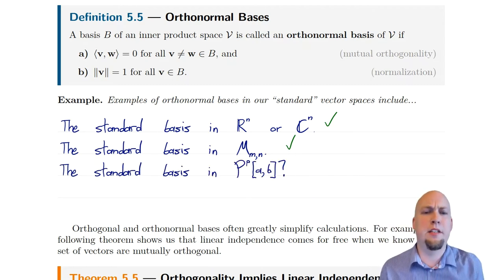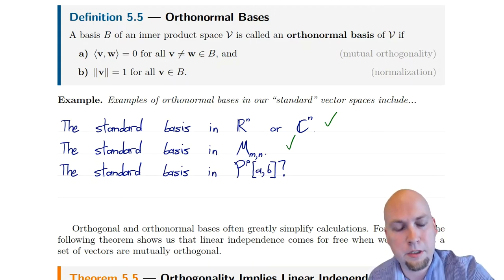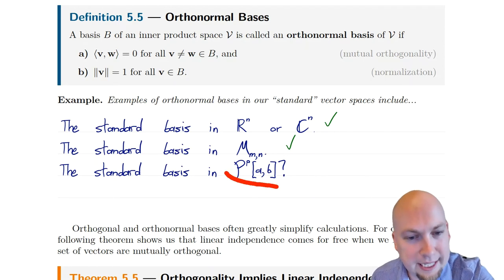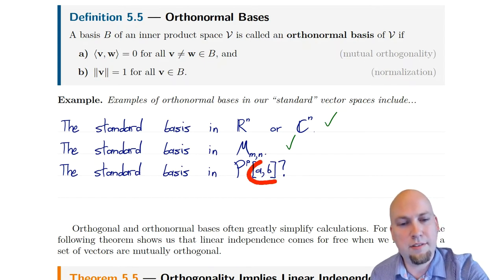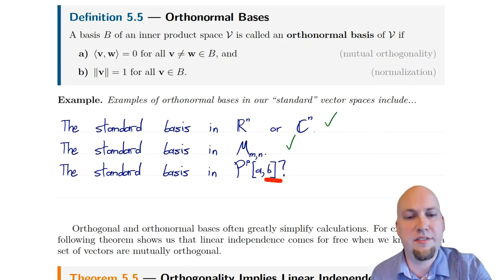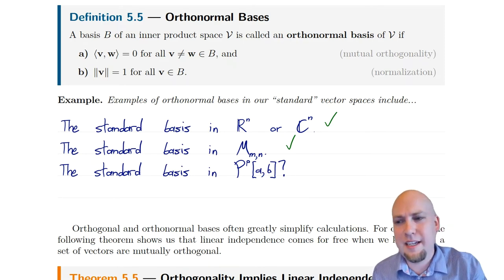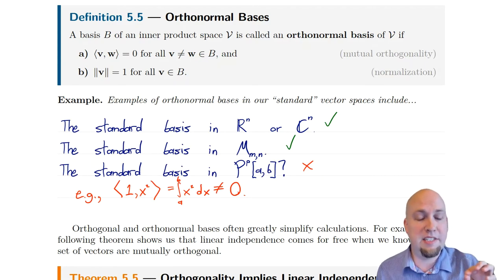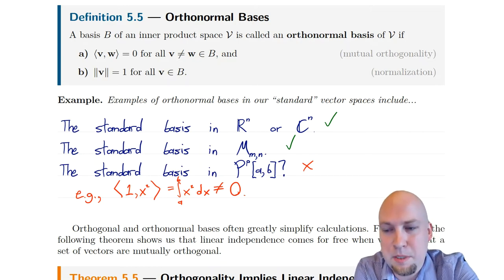Continuing the trend, it seems natural to ask about the vector space P_p — the degree less than or equal to p polynomials on the real interval from A to B. I'm working in the inner product space of degree p polynomials, and the inner product I'm using is just the integral from A to B of f(x) times g(x) — the standard inner product on this vector space. The question is: is the standard basis an orthonormal basis? This time we actually break the trend a little bit — this is not an orthonormal basis. You have to be a little bit careful when working in these function spaces. There are orthonormal bases in these function spaces, but they're actually all sort of uglier, and we'll come back to this problem at the end of the week.